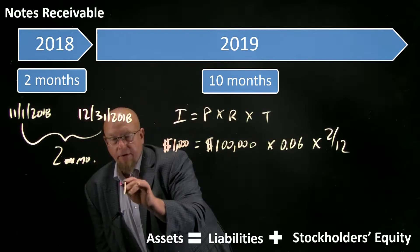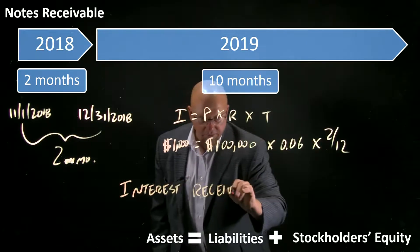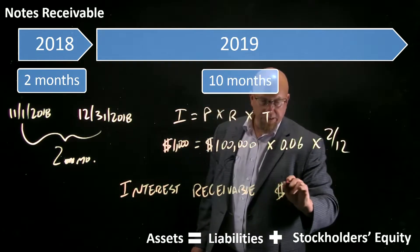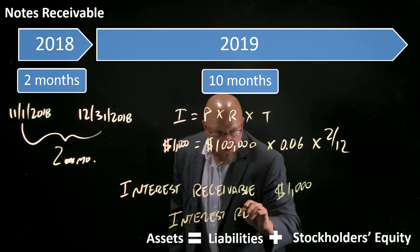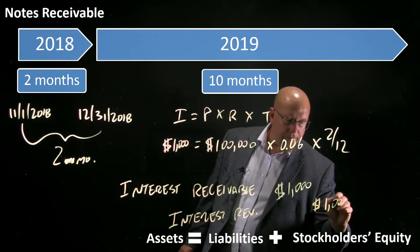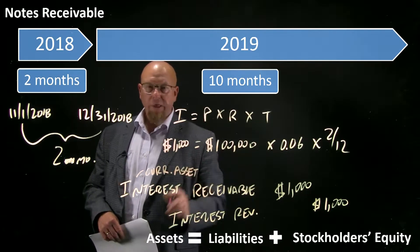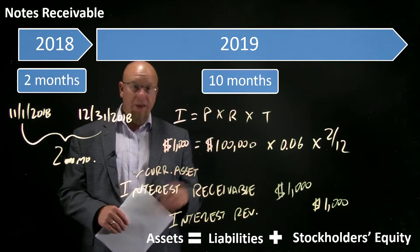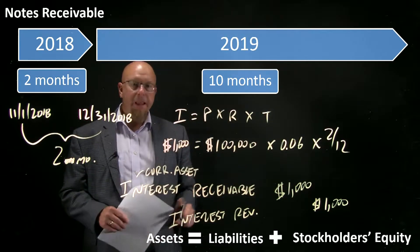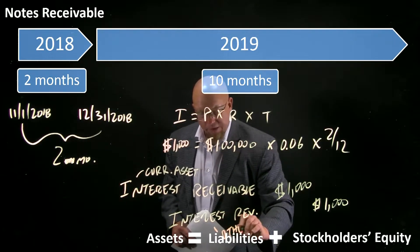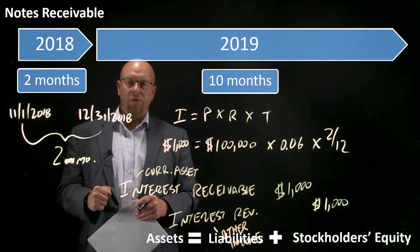On December 31, we record a new asset called interest receivable. The journal entry is: debit interest receivable $1,000, credit interest revenue $1,000. Interest receivable is a current asset on the balance sheet, because we expect it to be converted to cash within the next 12 months — specifically when this loan matures on Halloween. Interest revenue is an other income account on the 2018 income statement.